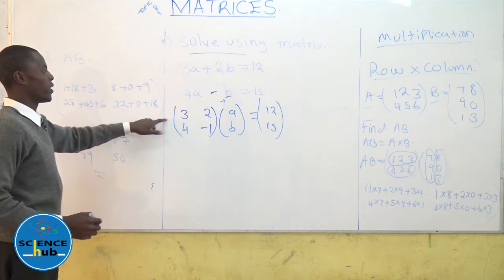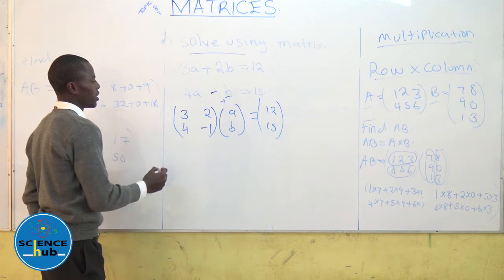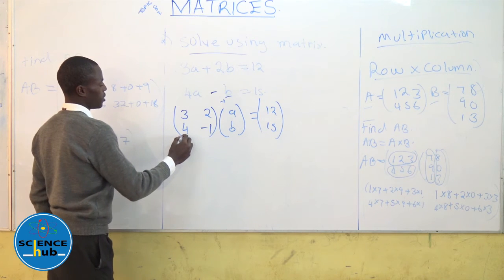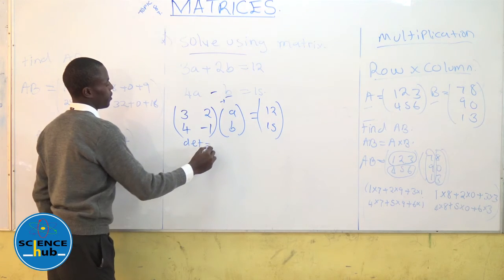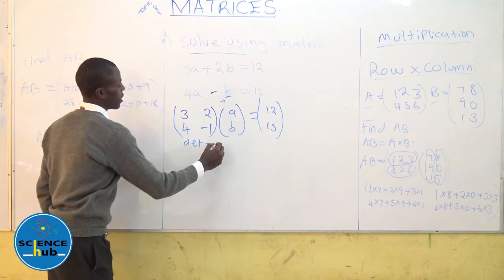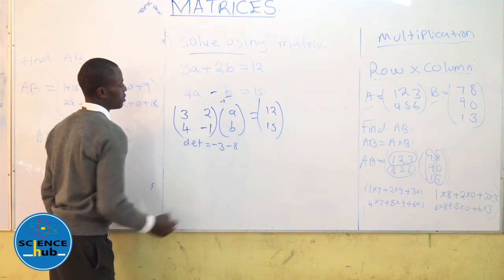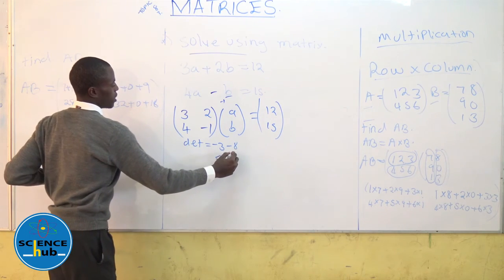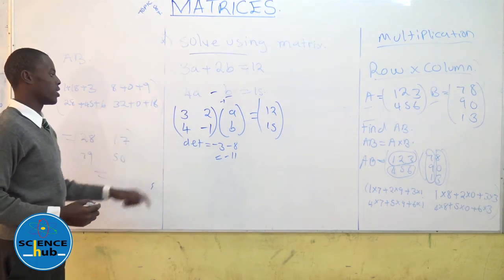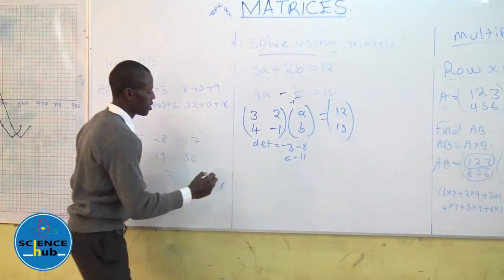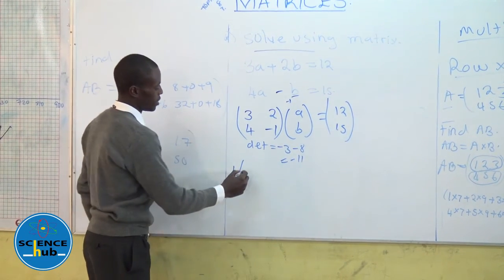Then you want to find the inverse of the coefficient matrix so that you can solve the simultaneous equation. You first find the determinant. The determinant will be negative 3 minus this diagonal which will be minus 8, so the determinant will be negative 11. Since we have gotten the determinant, we take one over the determinant times the inverse of that matrix.